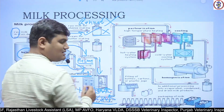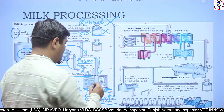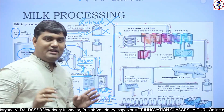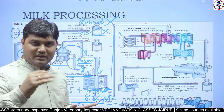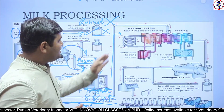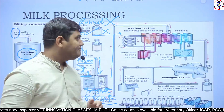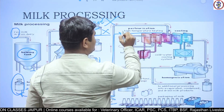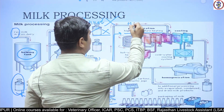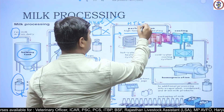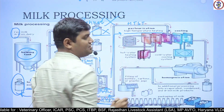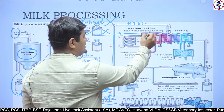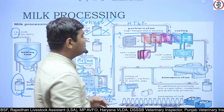After standardization, the milk is transferred for pasteurization. In the dairy industry, the process of pasteurization varies based on capacity. The typical diagram depicts HTST — High Temperature Short Time pasteurization. 73 degrees Celsius for 15 seconds is the HTST process. We will study this in detail in subsequent classes.